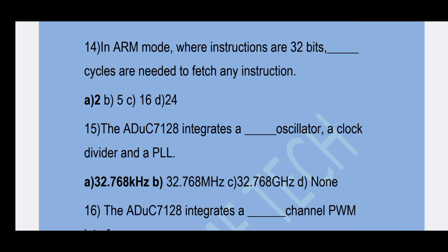Next question: The ADuC7128 integrates a 32.768 kHz oscillator, a clock divider, and PLL. Option A — 32.768 kHz is the correct answer.